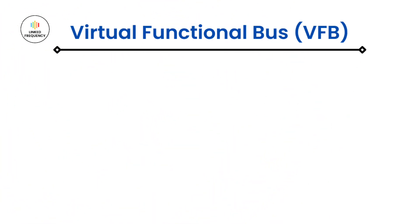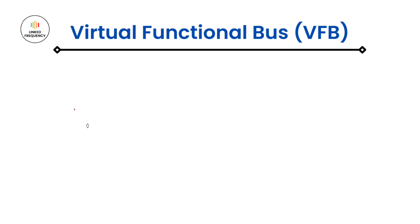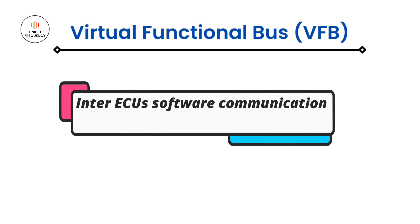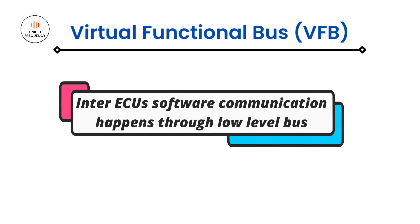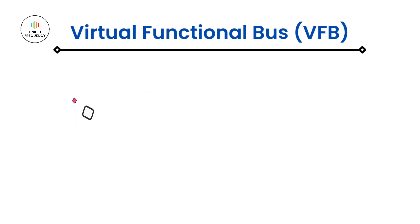Moving on to our next topic, that is Virtual Functional Bus. The Virtual Functional Bus is the abstraction of AUTOSAR software components' interconnections of the entire vehicle. It's called virtual because there is no physical connection between the software components. Instead, the software components of an ECU communicate with the software components of other ECUs in a system or vehicle using low-level communication buses like CAN or FlexRay. Because of this, the software component is independent of the actual underlying hardware.